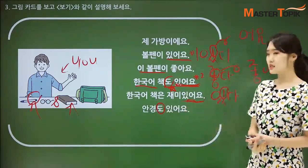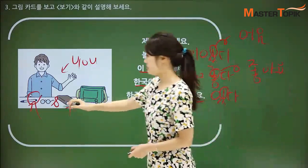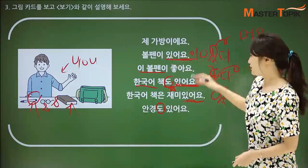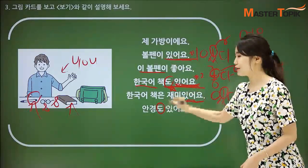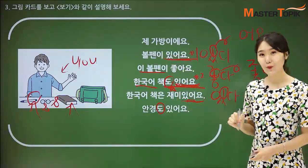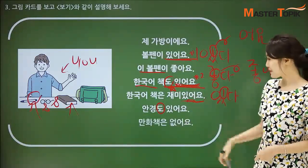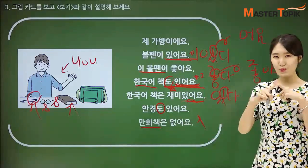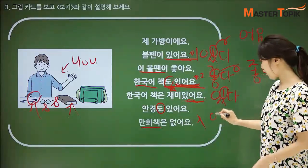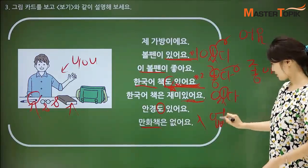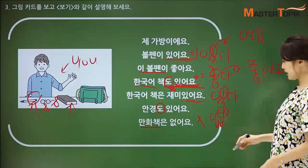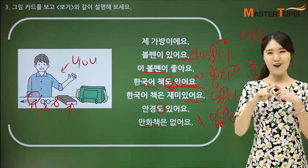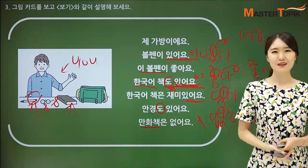안경도 있어요 — you want to say: I have a pen, a book, and also glasses, so 안경도 있어요. 만화책은 없어요 — no comic book. We use 어요: 없어요. 만화책은 없어요.